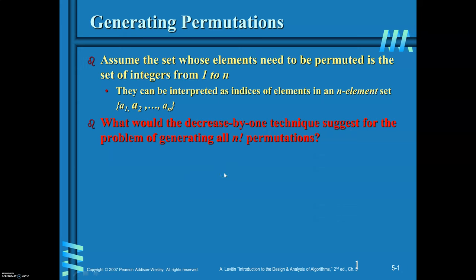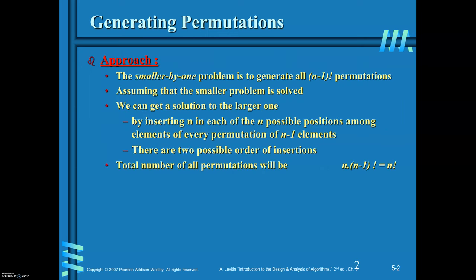The decrease-by-one technique suggests a bottom-up approach for generating all n! permutations. If you know the solution for (n-1)! permutations, you can find the solution for n!. Assuming the smaller problem is already solved, you get a solution for the larger one by inserting n into each of the n possible positions among elements of every permutation of n-1 elements.